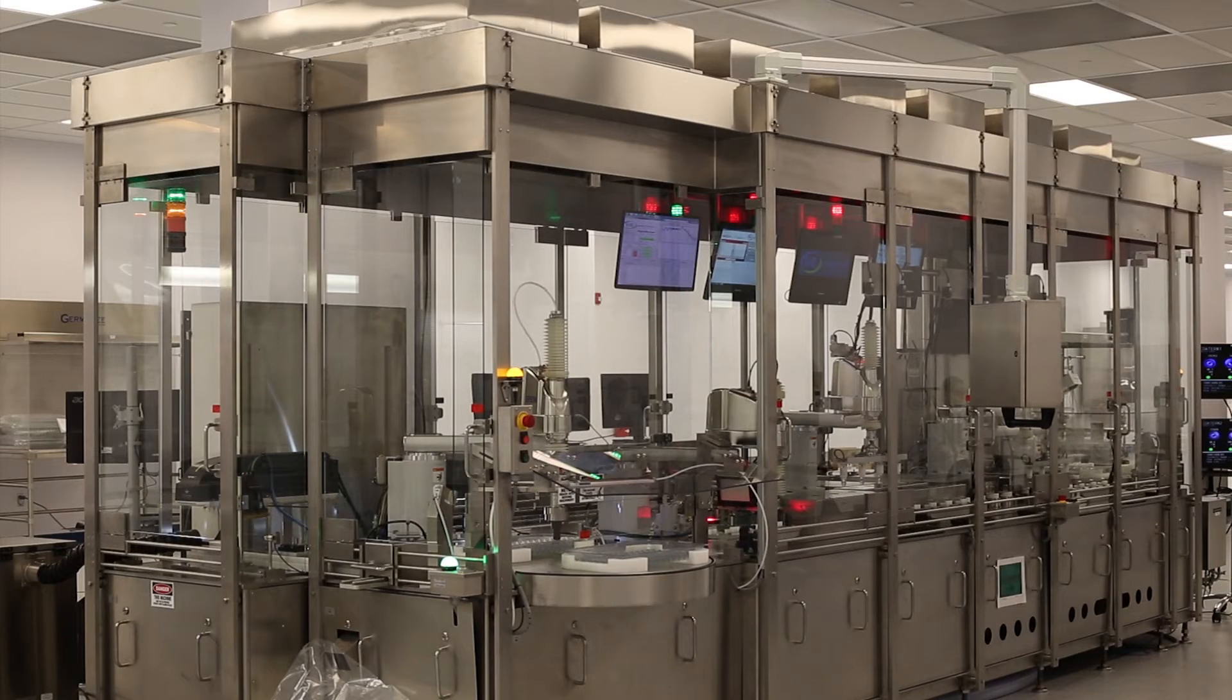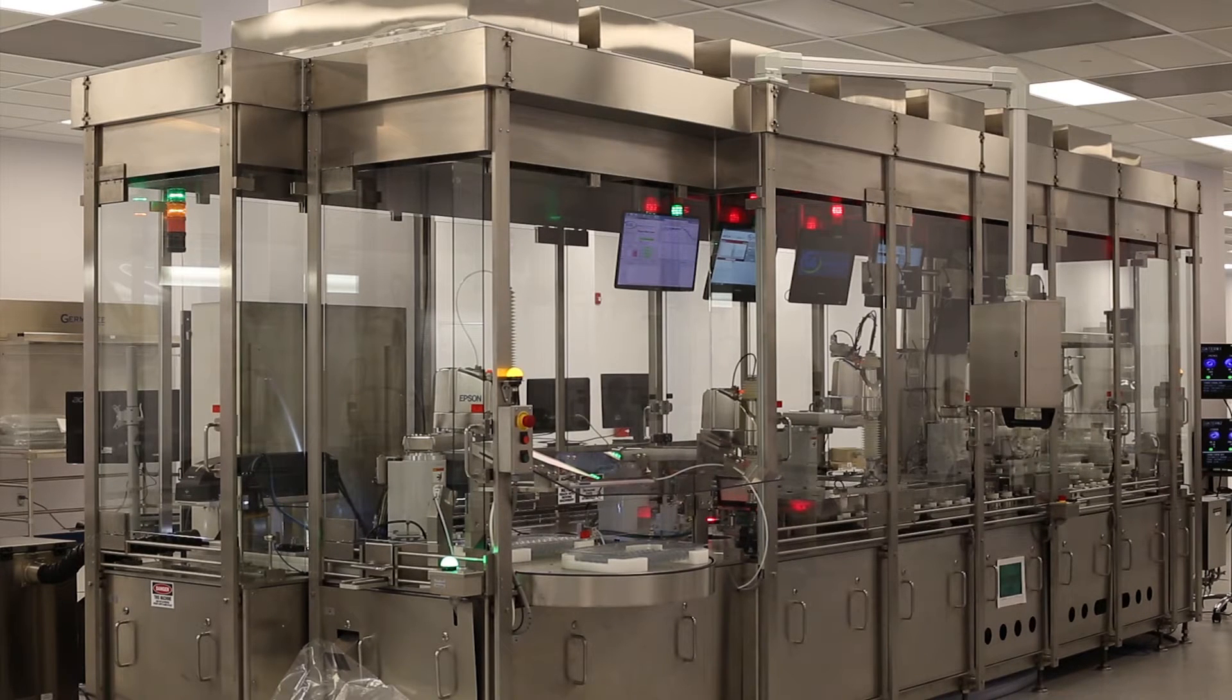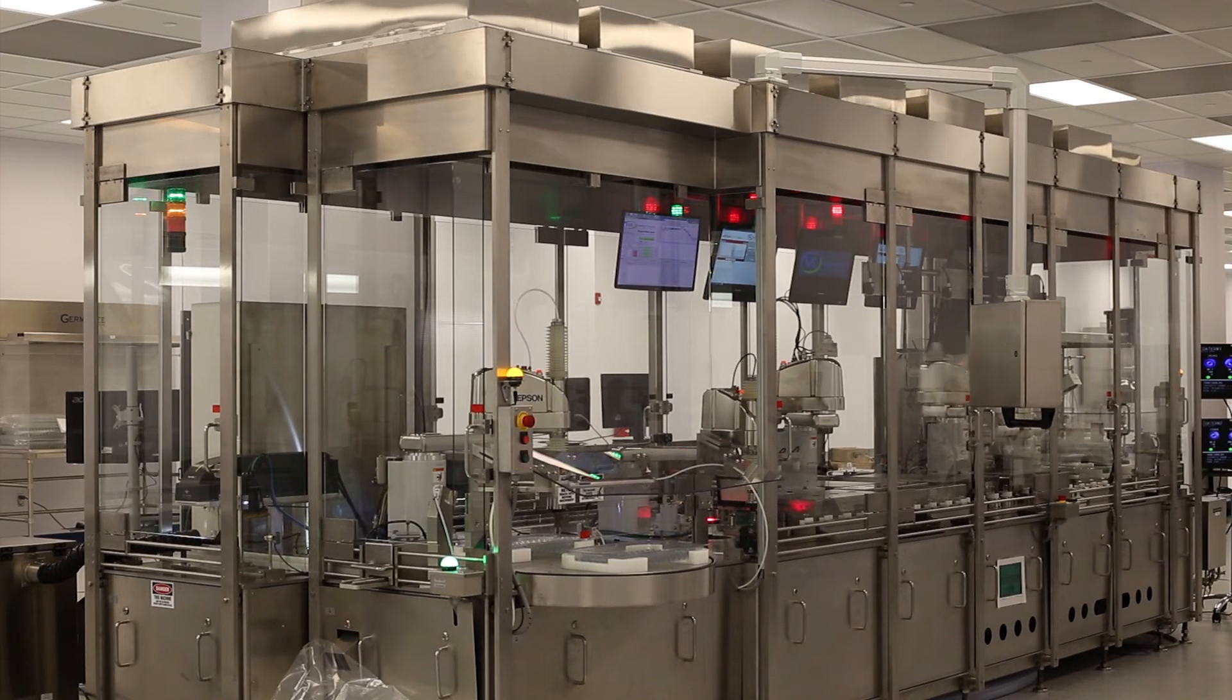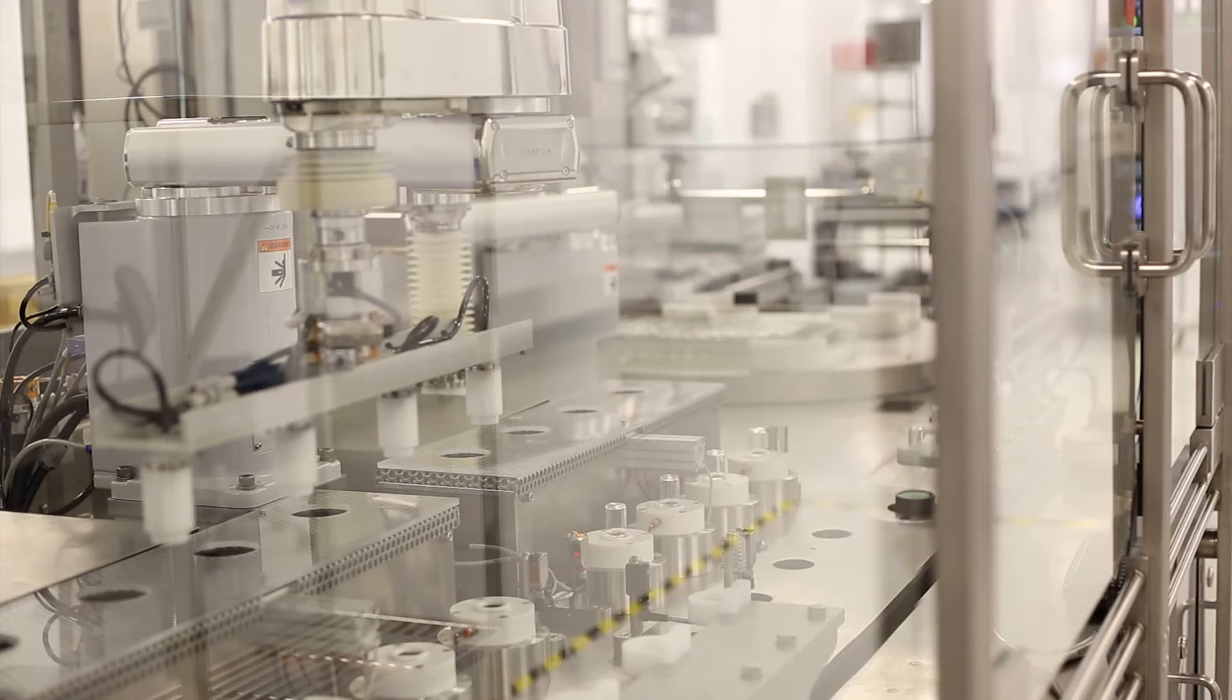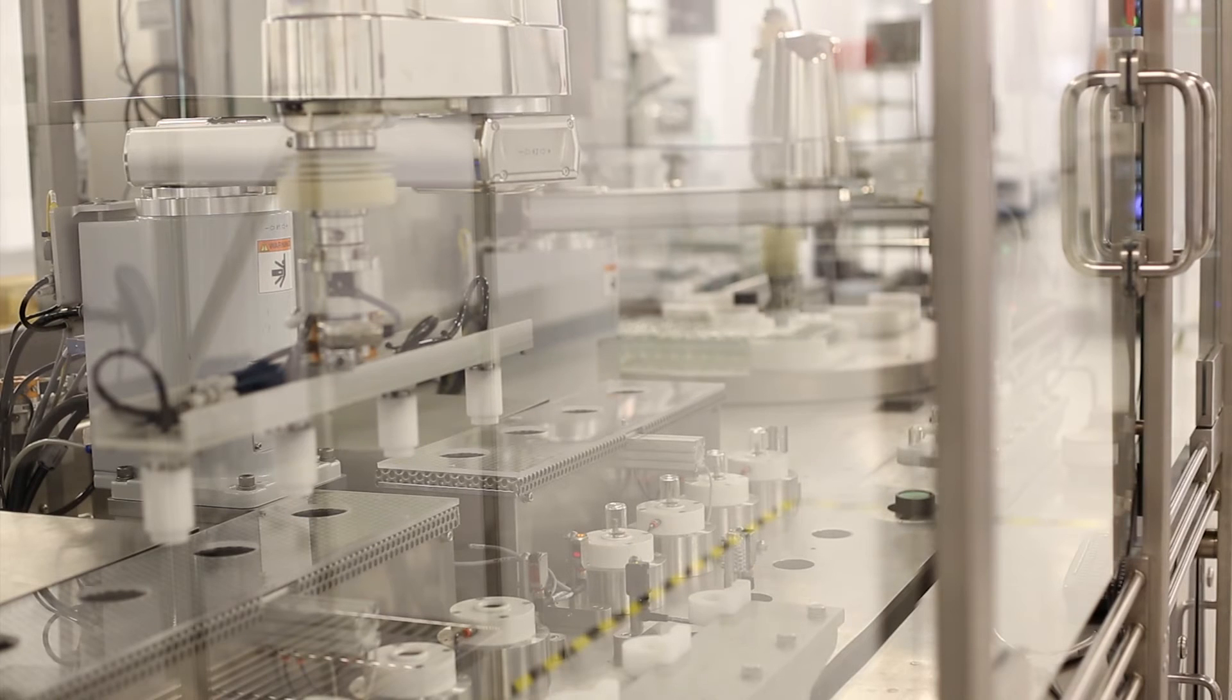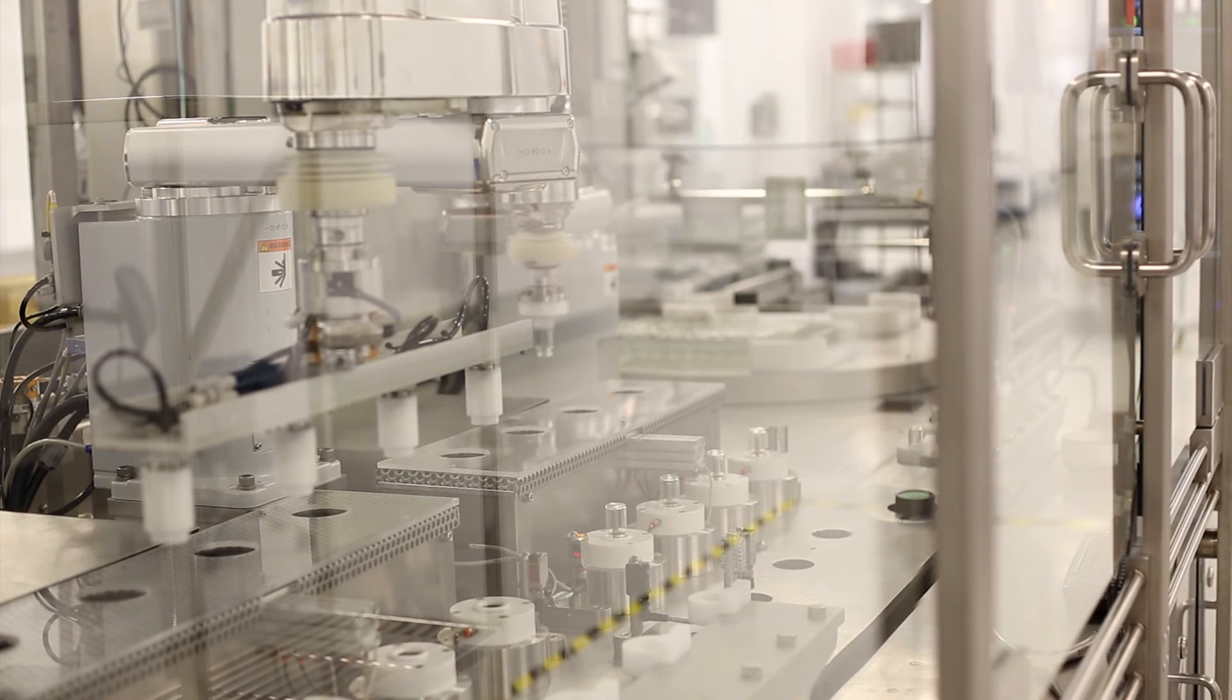The vial coating line is a fully automated coating and inspection system equipped with local laminar airflow systems that maintains the parts in an ISO class 5 environment for particulates. The line is capable of coating 2, 6, and 10 milliliter volume vials.